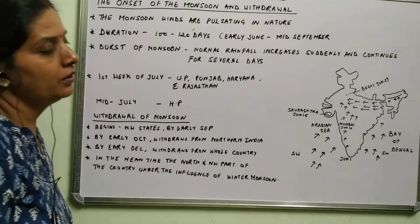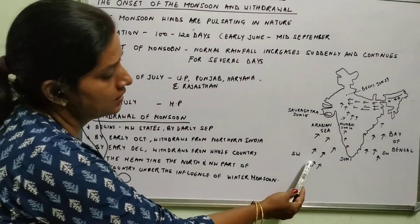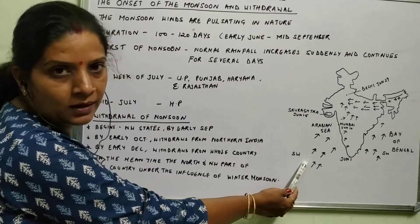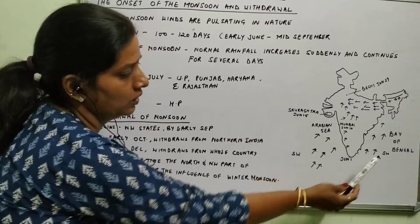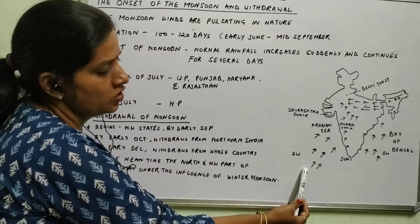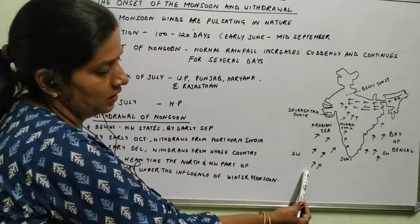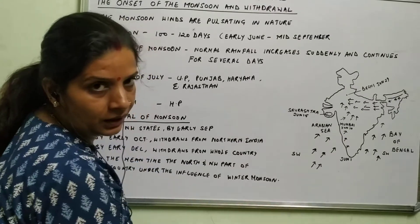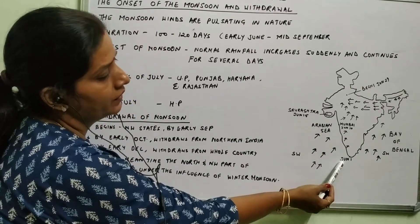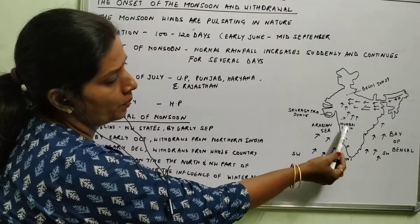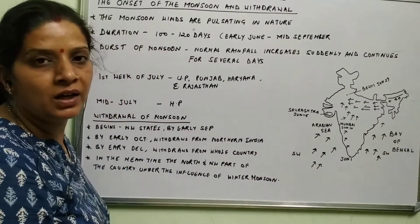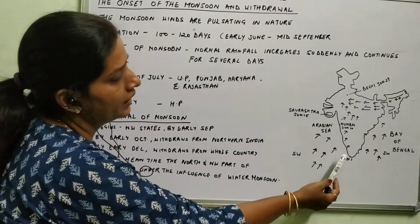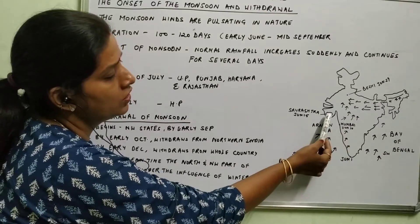The southwest monsoon branch divides itself into two parts: the Arabian Sea branch and the Bay of Bengal branch. The Arabian Sea branch comes to India at June 1st at the tip of India. After that, this branch reaches Mumbai on June 10. These are the tentative dates for the monsoon to arrive in India. After that, by June 15 it reaches Saurashtra.